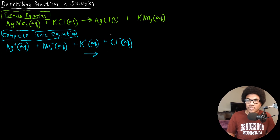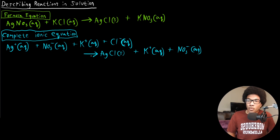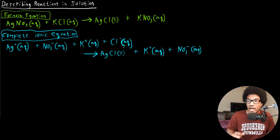All we've done is rewrite our reactants where we know these are strong electrolytes that are going to dissolve in solution and become these separate hydrated ions. For the products, we have solid silver chloride, plus hydrated potassium and hydrated nitrate anions. Everything is written out — if it dissolves in aqueous solution into separate ionic components, we show that.